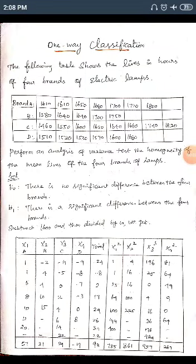Today we start unit number two on the classification problem. The problem gives a table showing lives in hours of four brands of electric lamps — Brand A, Brand B, Brand C, and Brand D. The problem asks us to perform an analysis of variance test. Since we have only rows for brand types, this is a one-way classification problem.